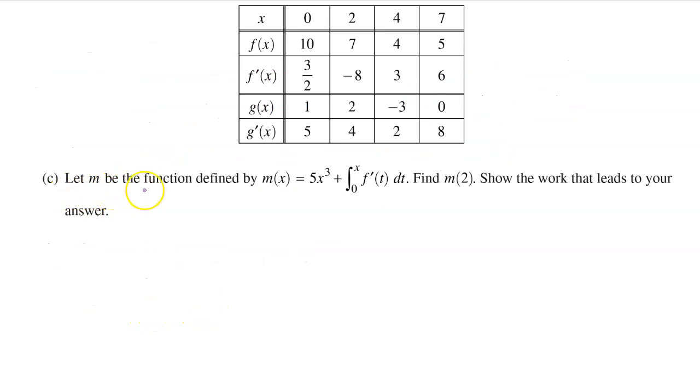Part c. Let m be the function defined by m of x equals 5x to the third power plus the integral from 0 to x of f prime at t dt. Find m at 2. Show the work that leads to your answer.